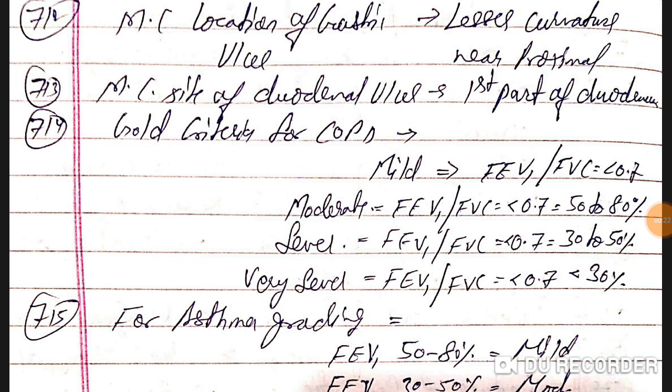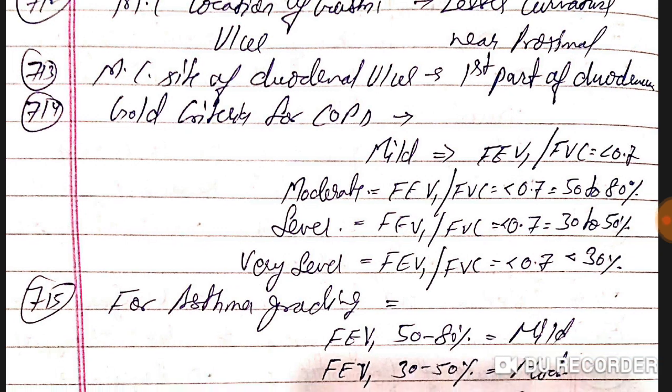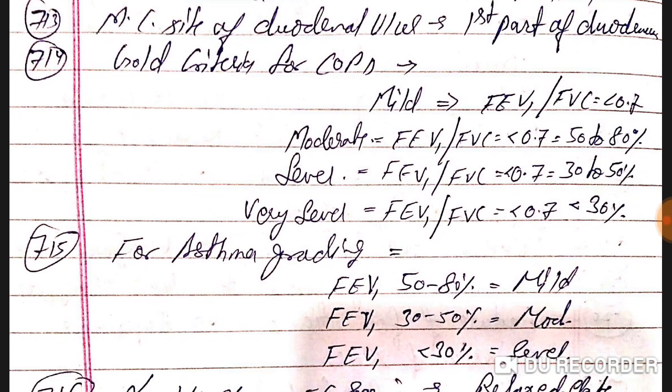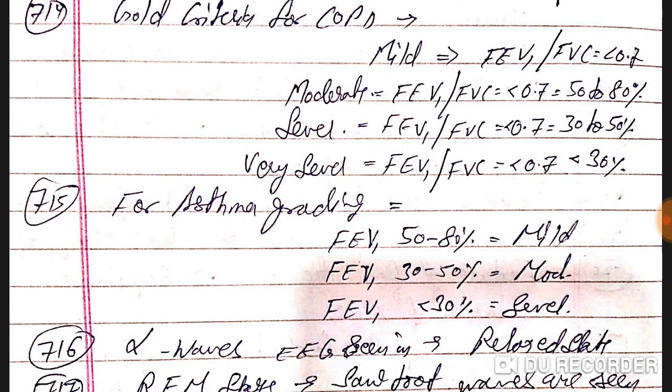Most common location of gastric ulcer is the lesser curvature, near proximal lesser curvature. Most common site of duodenal ulcer is the first part of duodenum.